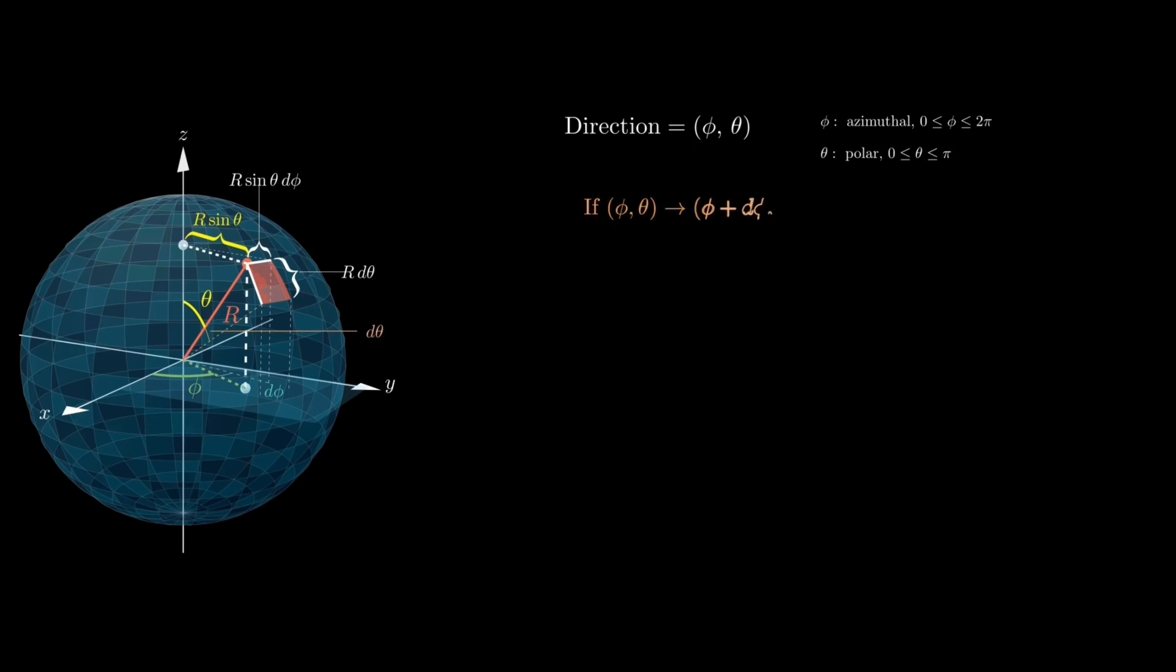The key question now is that if we notch both phi and theta by tiny amounts d phi and d theta, what solid angle do we sweep out? We've already seen that the curved area element on a sphere is given by r times d theta multiplied by r sin theta d phi. That simplifies to r squared sin theta d theta d phi. Dividing by r squared as per the definition gives us the differential solid angle d omega equals sin theta d theta d phi. This is our central result and it tells us how much angular space is covered by an infinitesimal rectangle in theta and phi.